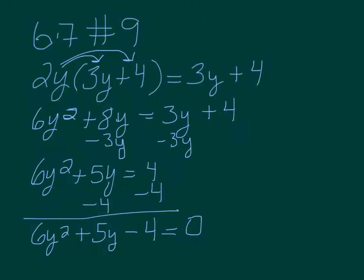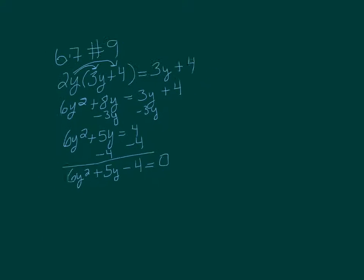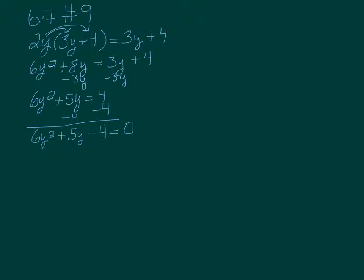So now we're actually ready to factor it and solve it. I'm going to use the AC method to factor it. 6 times negative 4 is negative 24. So we want factors that are going to multiply to be negative 24 but add up to be 5.